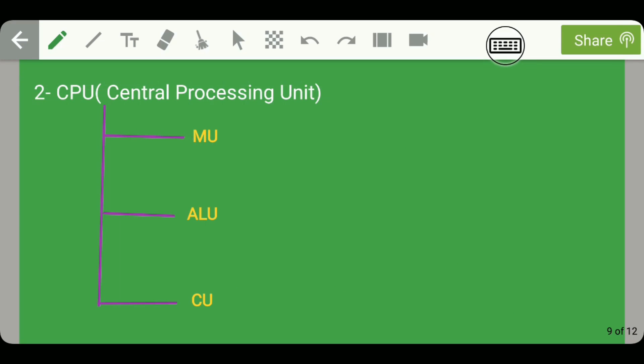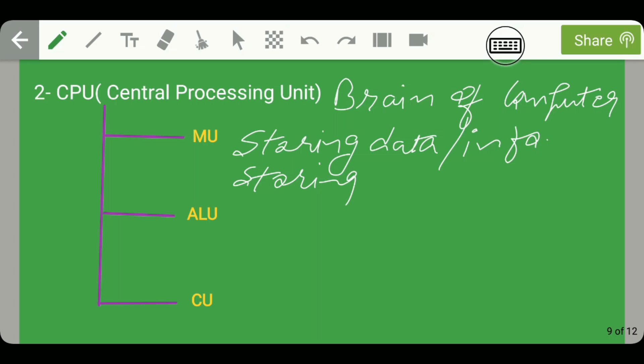Moving on to CPU, which stands for Central Processing Unit, it is also known as the brain of a computer. CPU again has three components: first is memory unit, second is ALU which stands for Arithmetic and Logical Unit, and the third one is Control Unit. The memory unit is meant for storing data and information. It is also meant for storing intermediate results.